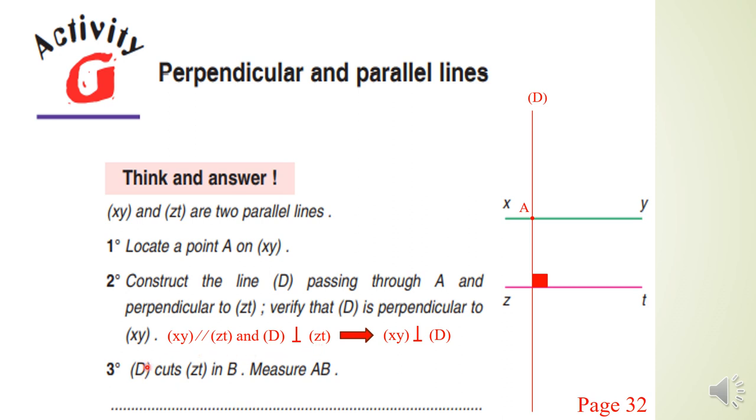Let's continue. (D) cuts (zt) in B. The point of intersection of (D) and (zt) is B. Then B is the point here. Excellent.